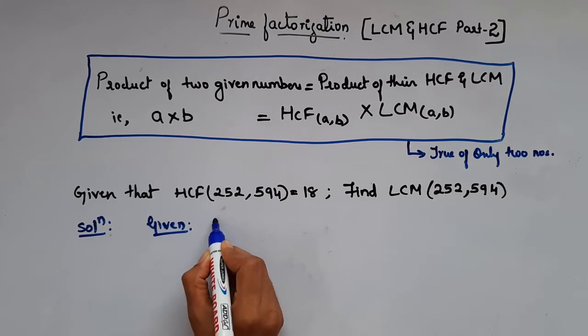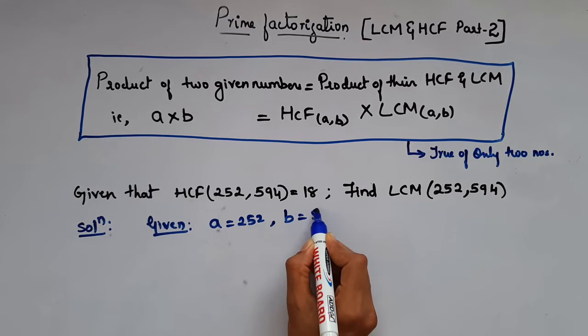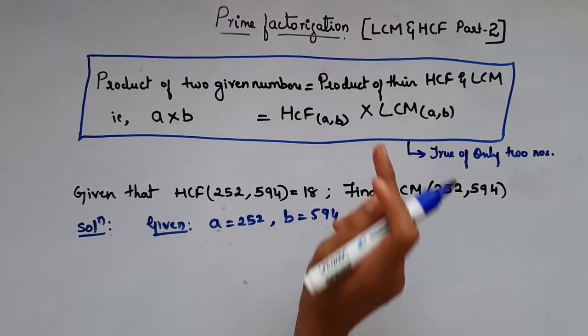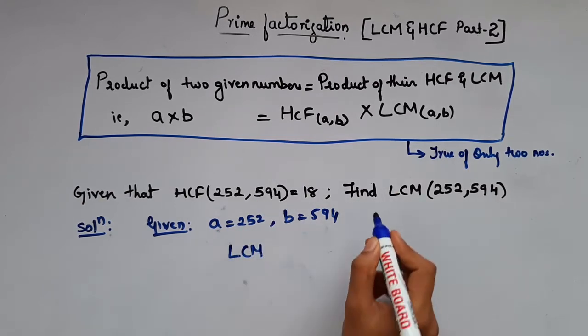Given is a and b, that is 252 and b is 594. So simply apply this formula. By rearranging, you will get LCM.